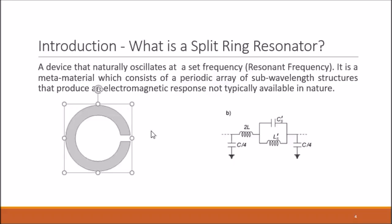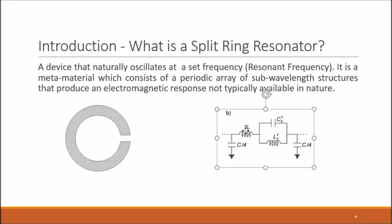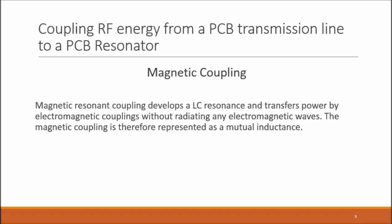Here we have the structure of the split ring resonator along with its equivalent circuit diagram. Coupling radio frequency energy from a PCB transmission line to a PCB resonator is done via magnetic coupling. The magnetic coupling develops an LC resonance and transfers power via electromagnetic coupling without radiating any electromagnetic waves.